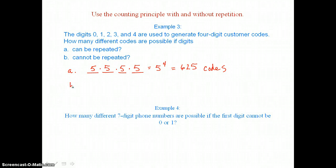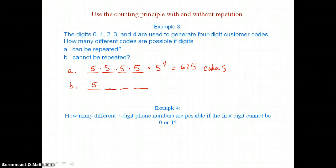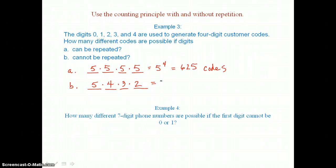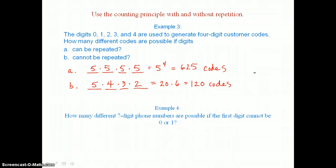In part B, digits cannot be repeated. There are five digits possible for the first digit in the code, but then one is used so there are only four digits left for the second digit, then three left, and then two. So this product is five times four times three times two, which is twenty times six or one hundred twenty different codes possible when digits cannot be repeated — quite a few less codes.